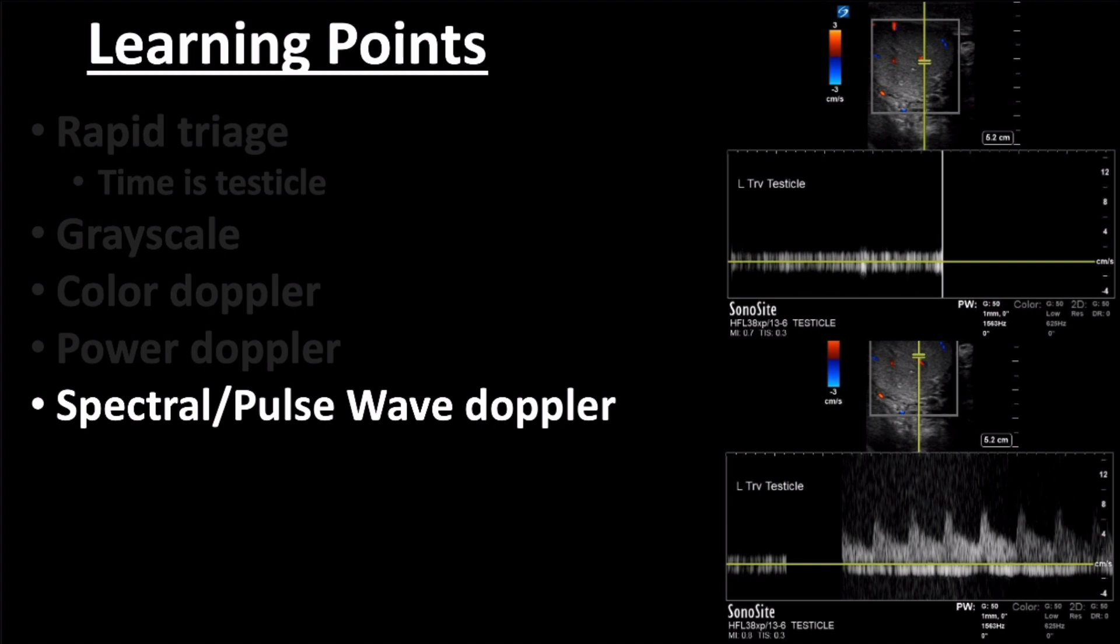This step is important because in early torsion, venous circulation is compromised first. If all you look for is color or power Doppler, you may only see arterial flow and have a false sense of reassurance. A careful evaluation of venous and arterial waveforms will allow complete evaluation and detection of subtle or early cases that would still require intervention. Thanks for watching.